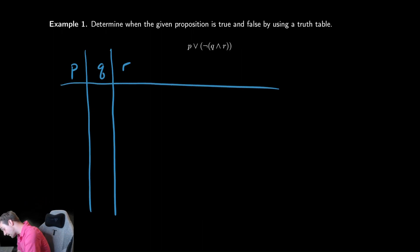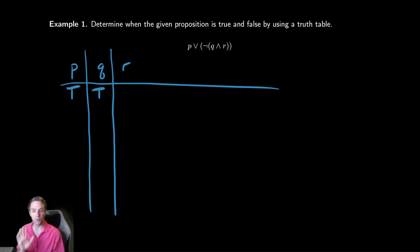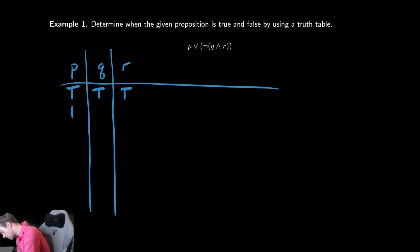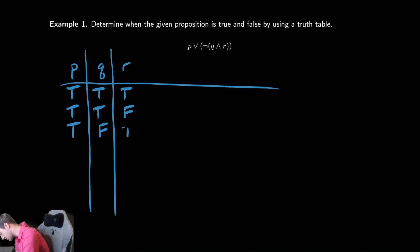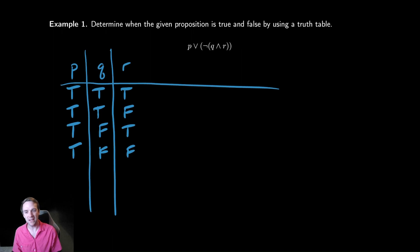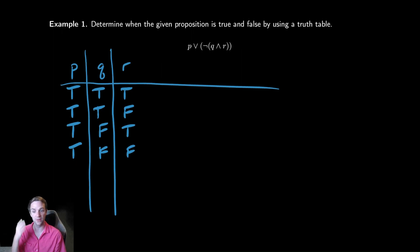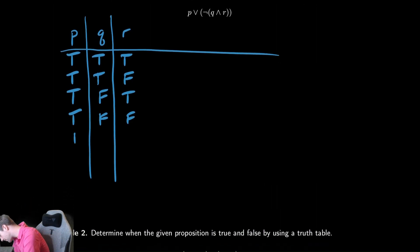Let's think about all the combinations. If I fix p and q both as true, there are two options for r — r is either true or r is false. Now keeping p the same but changing q from true to false, there are again two options where p is true and q is false, and r can be either true or false. Then we do the same thing with p as false, copying down four falses, giving us all four combinations of q and r: true/true, true/false, false/true, and false/false.